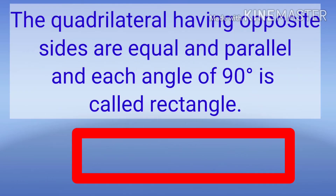Now about rectangle: a quadrilateral whose opposite sides are equal and parallel and each angle is 90 degrees is called a rectangle. You can look at the given figure — it is a rectangle and its opposite sides are parallel.